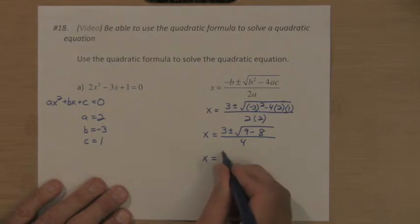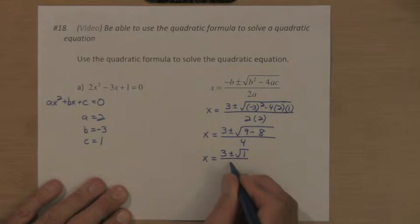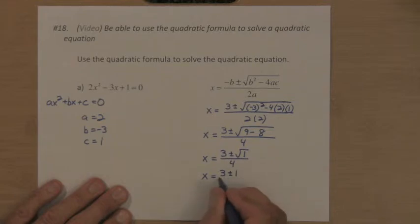Under that square root we have 9 minus 8, which is the square root of 1. So we have 3 plus or minus the square root of 1 over 4. The square root of 1 is 1, so we get this answer, x equals 3 plus or minus 1 over 4.